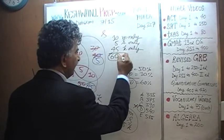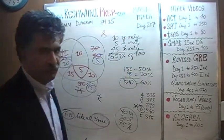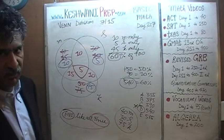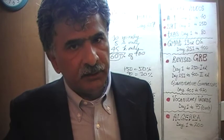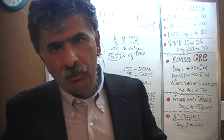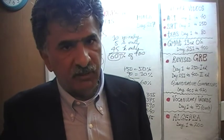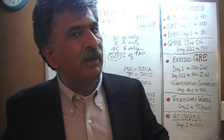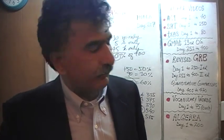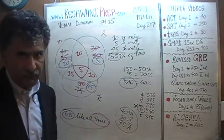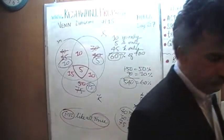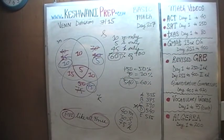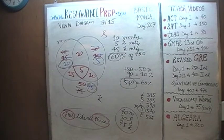Keep in mind that this 60 represents 60% of 900. Once we've determined that 60% of the surveyed people engage in only one activity, all we have to do at the end is calculate 60% of 900 — which is 540 — instead of worrying about 900 from the very beginning. I'll see you tomorrow. Bye now.